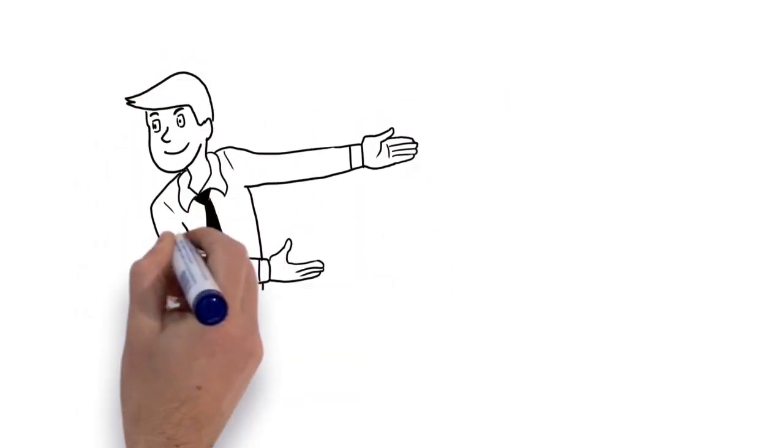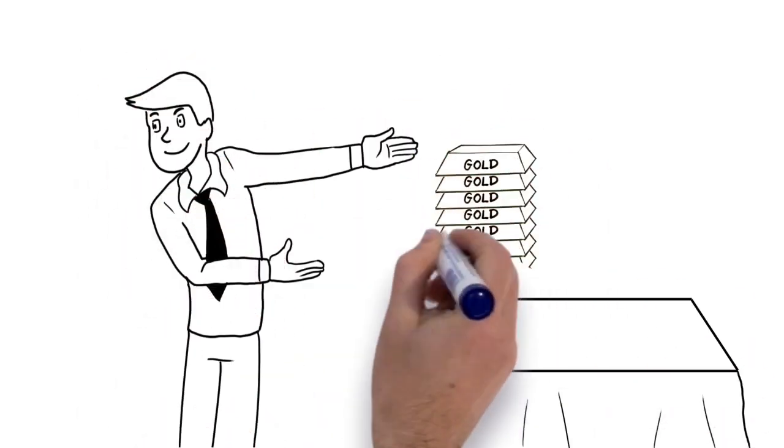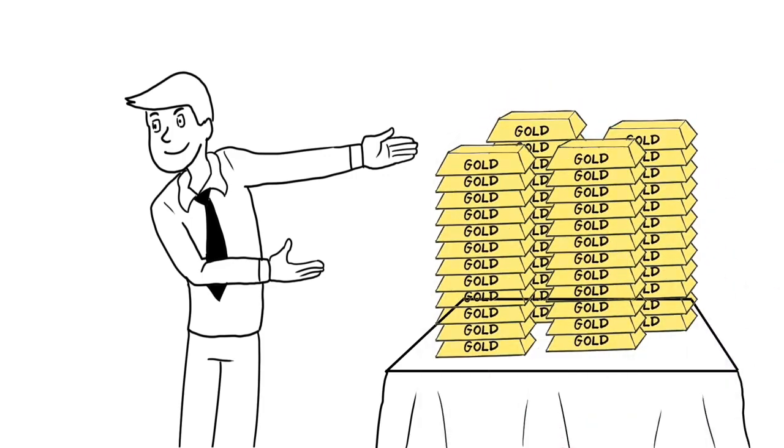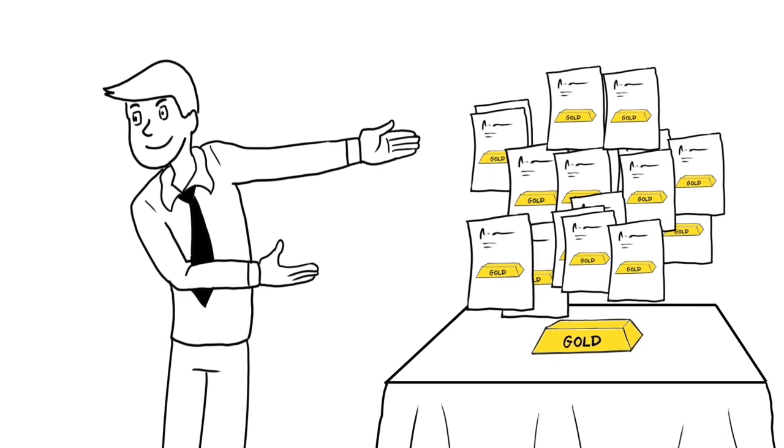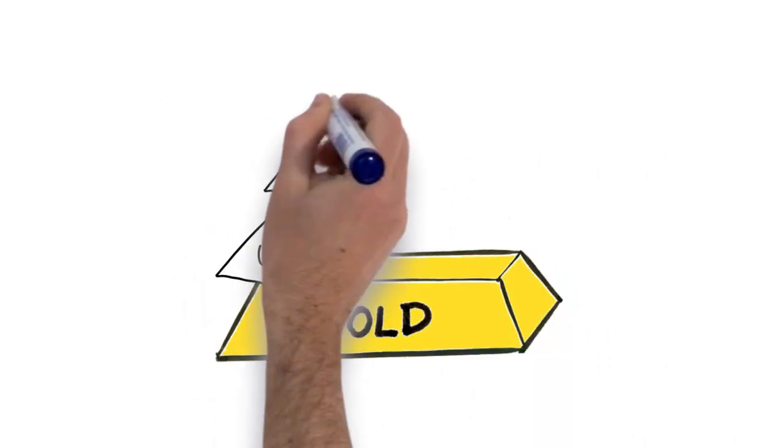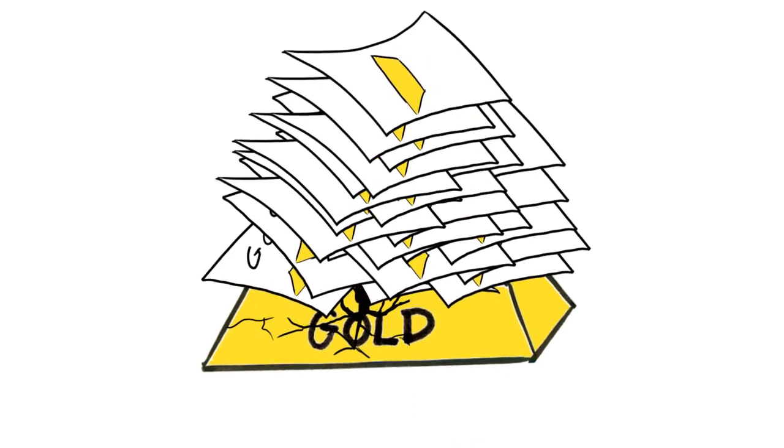Price manipulation can only happen in these two ways: either with the sale of previously leased physical gold on the market or with a massive sale of virtual paper gold. In both cases, the sheer mass of supply helps keep the price low.